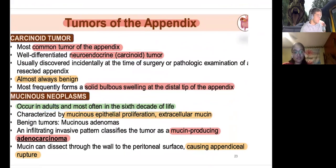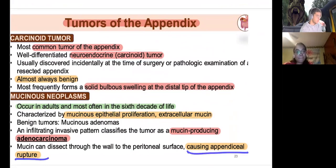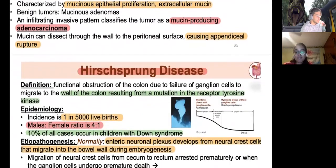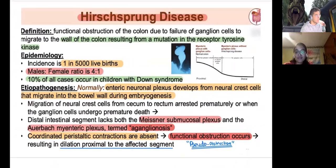Mucinous neoplasia of the appendix is more often seen in adults over 60 years old — increased glandular proliferation leading to adenocarcinoma. Rupture is dangerous because it causes peritonitis, which can be fatal.